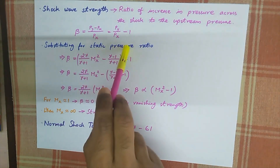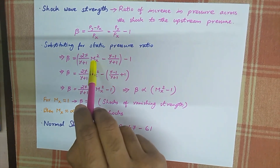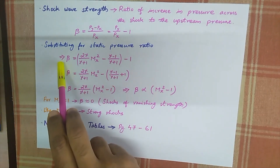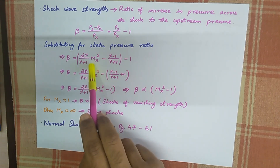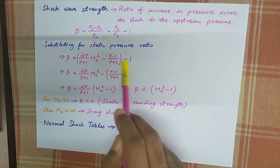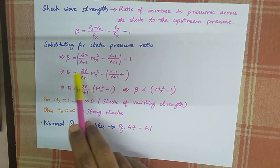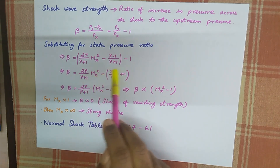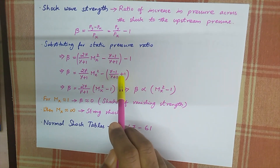Substituting for the static pressure ratio using the upstream Mach number Mx, beta equals (2*gamma/(gamma+1)) * Mx² - (gamma-1)/(gamma+1) - 1, which simplifies to beta = (2*gamma/(gamma+1)) * Mx² - (gamma-1)/(gamma+1) - 1.